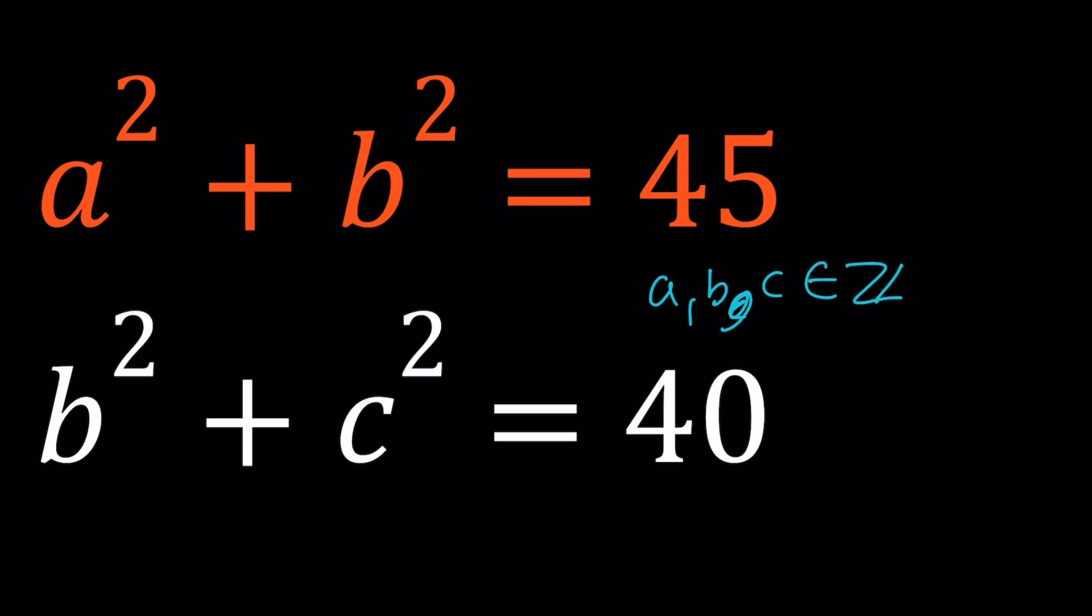This is a Diophantine system, and we're looking for integer solutions. So, how do we solve such a system? Obviously, we have two equations, but three variables. If we were solving for real numbers, you could just fix one of these variables, and then you would find infinitely many solutions for the system. That's why we're looking for integer solutions.